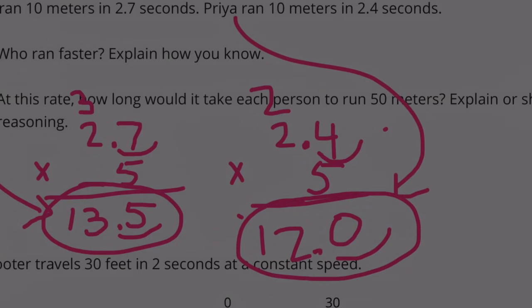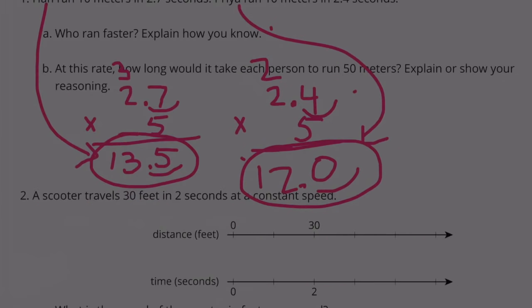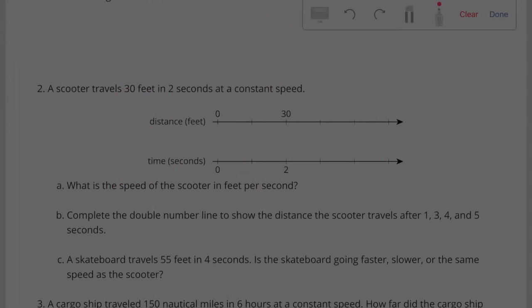At this rate, Han would run 50 meters in 13.5 seconds. At this rate, Priya would run 50 meters in 12 seconds. Number 2: A scooter travels 30 feet in 2 seconds at a constant speed.